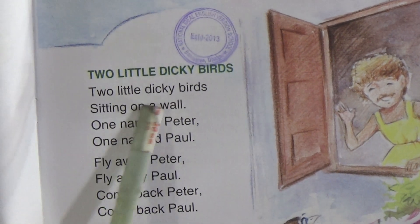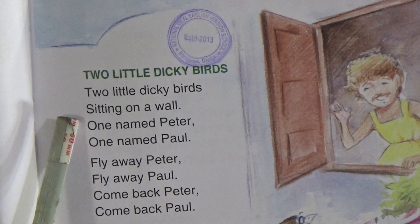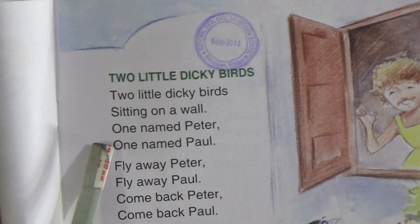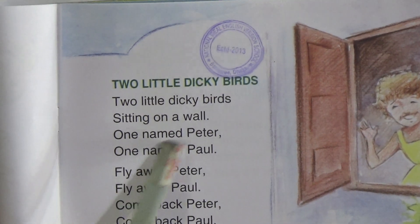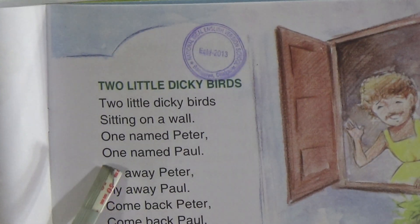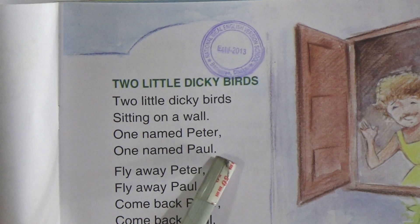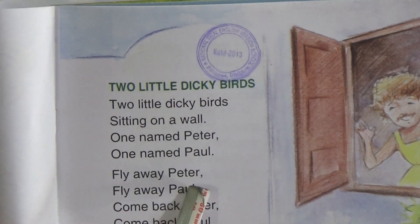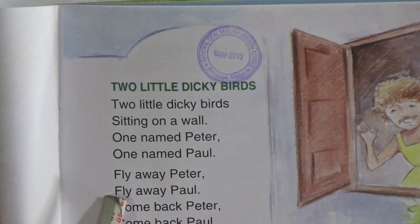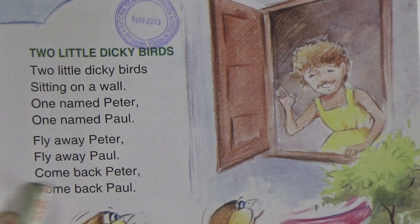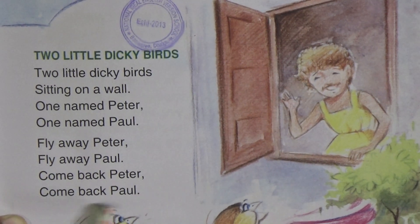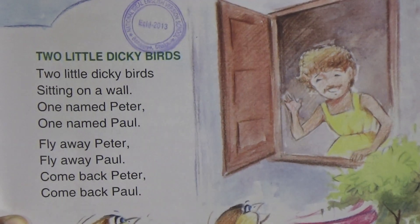Two Little Dicky Burst. Sitting on a wall. One named Peter. One named Paul. Fly away Peter. Fly away Paul. Come back Peter. Come back Paul.